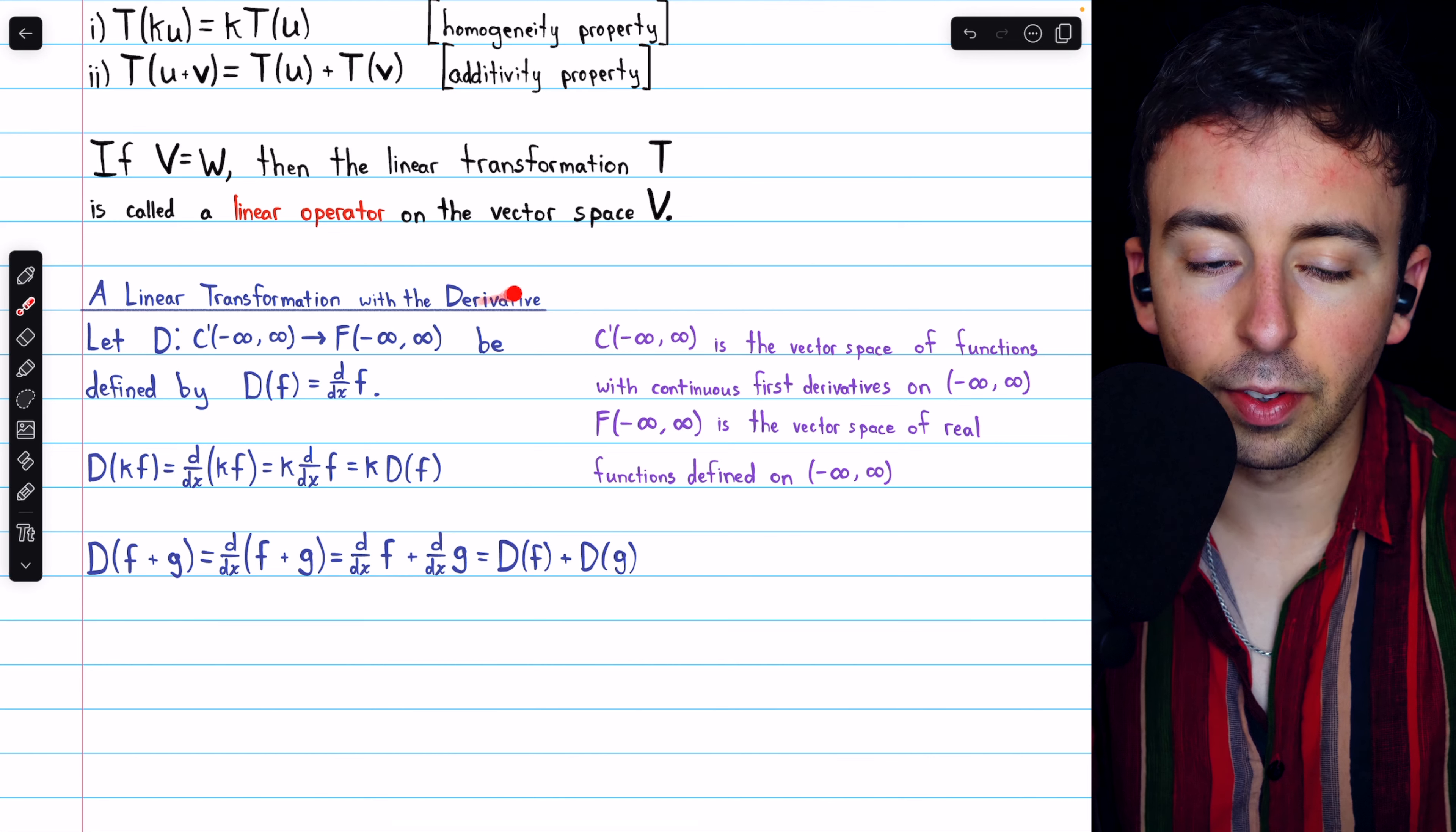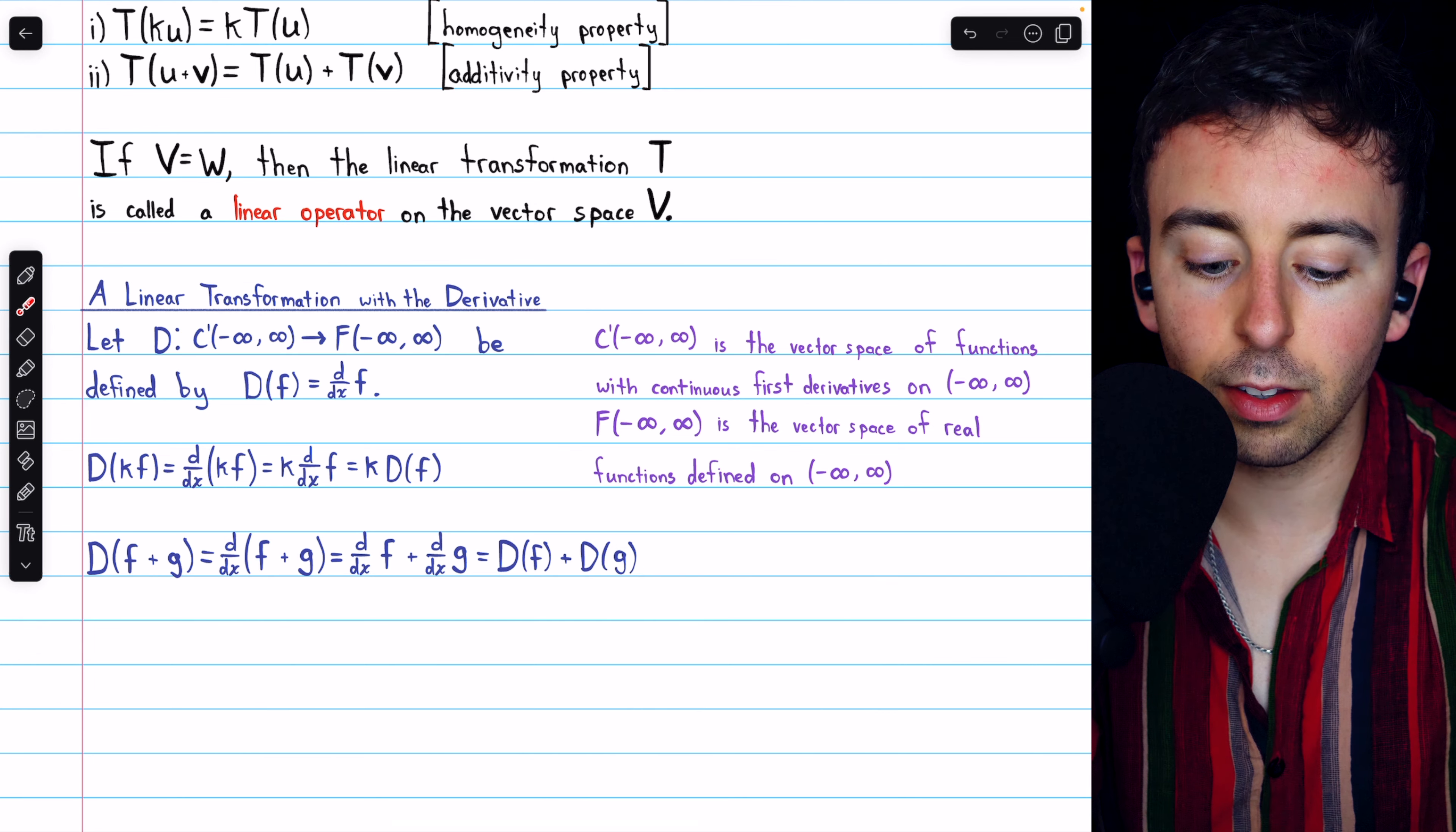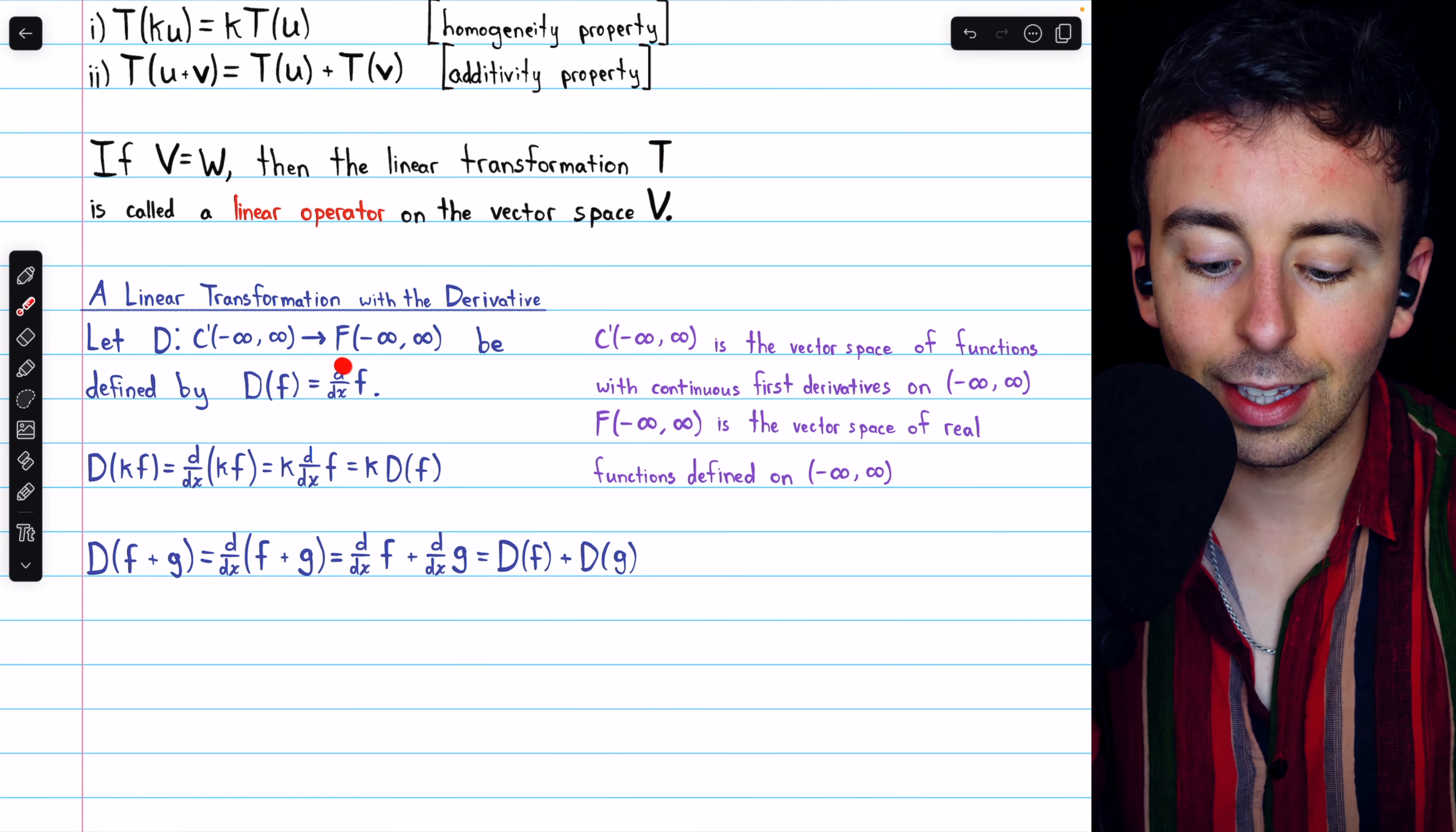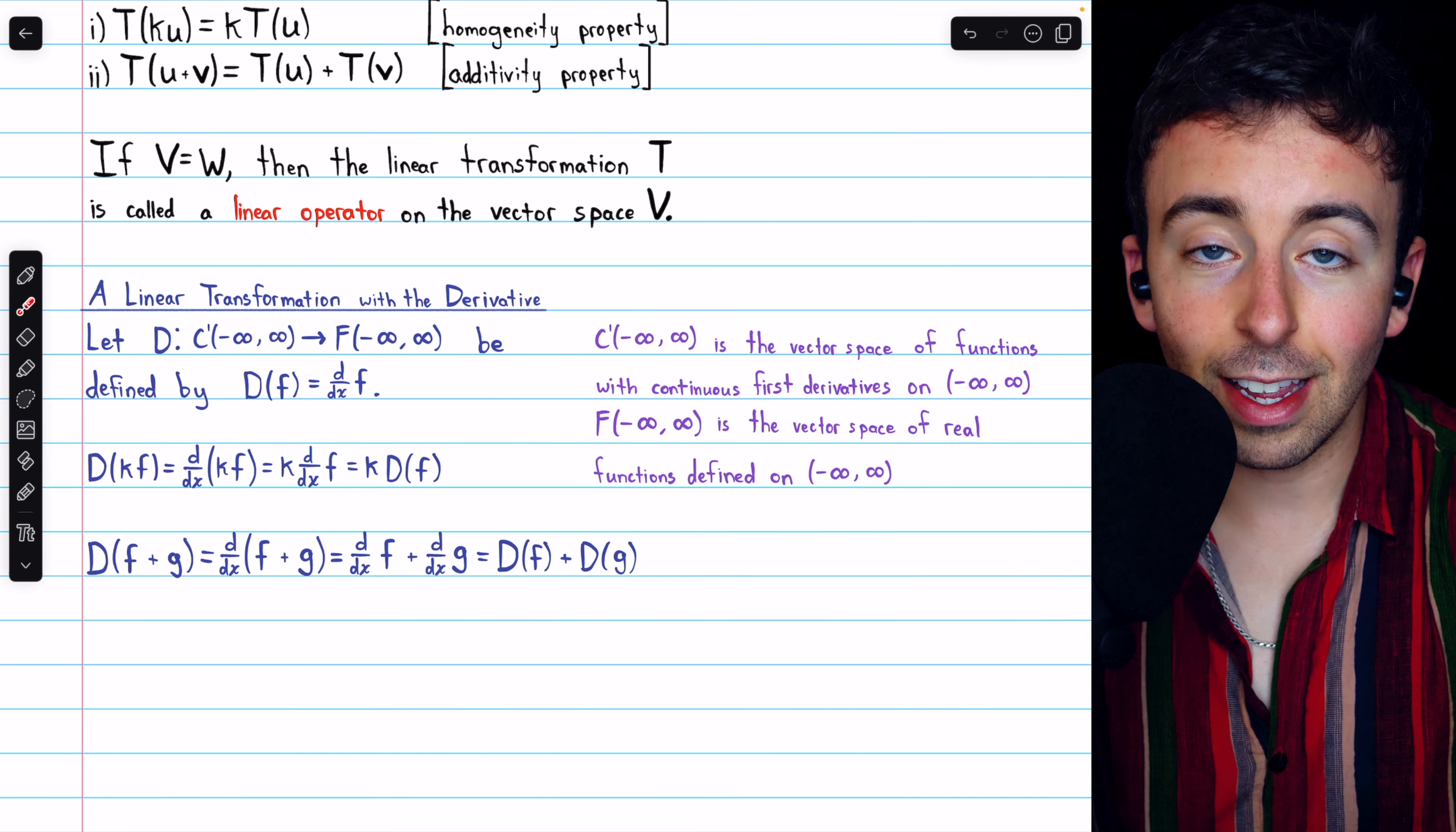Here's our first example involving the derivative. Letting D be the mapping from continuously differentiable functions to the vector space of real valued functions defined like this, so D just takes each function and outputs its derivative, this is a linear transformation.